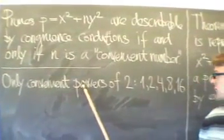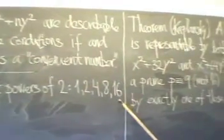Now, the only convenient powers of 2 are 1, 2, 4, 8, and 16.